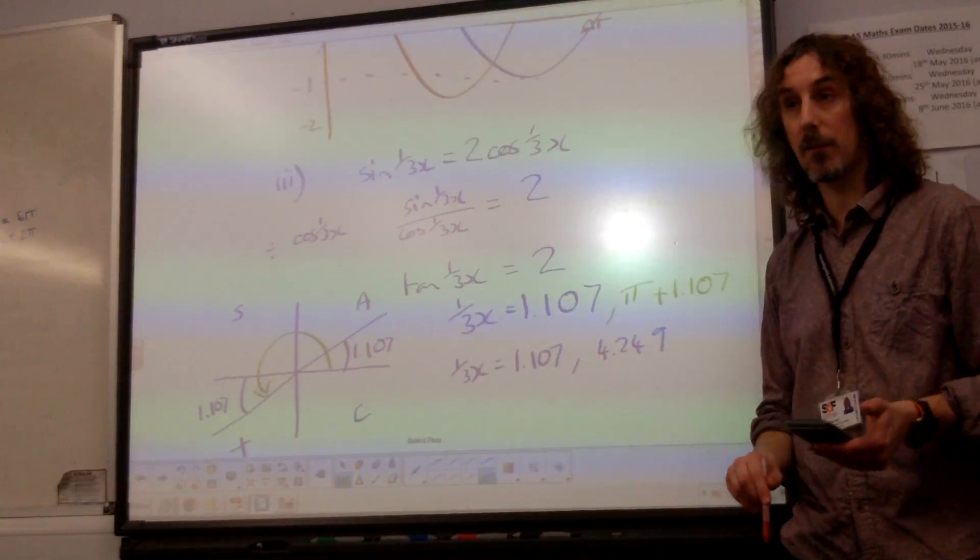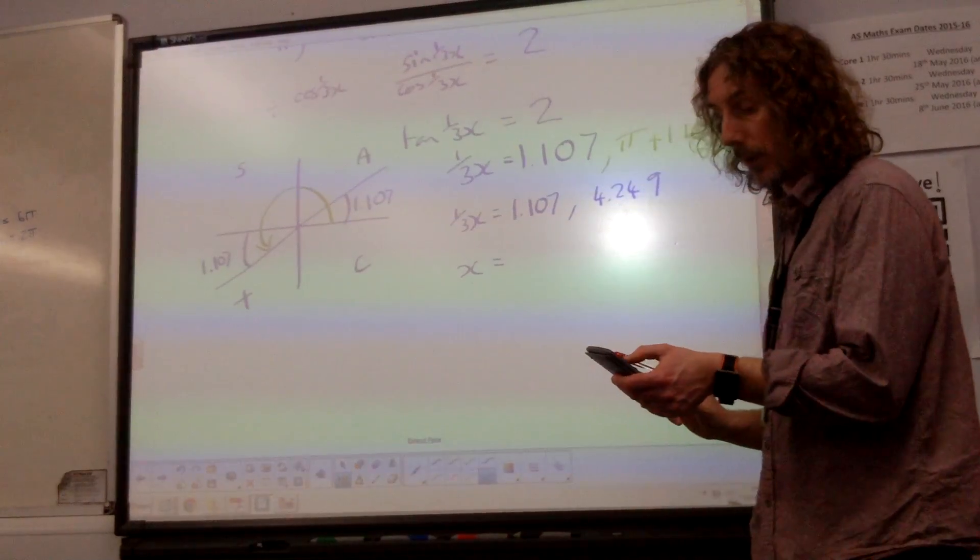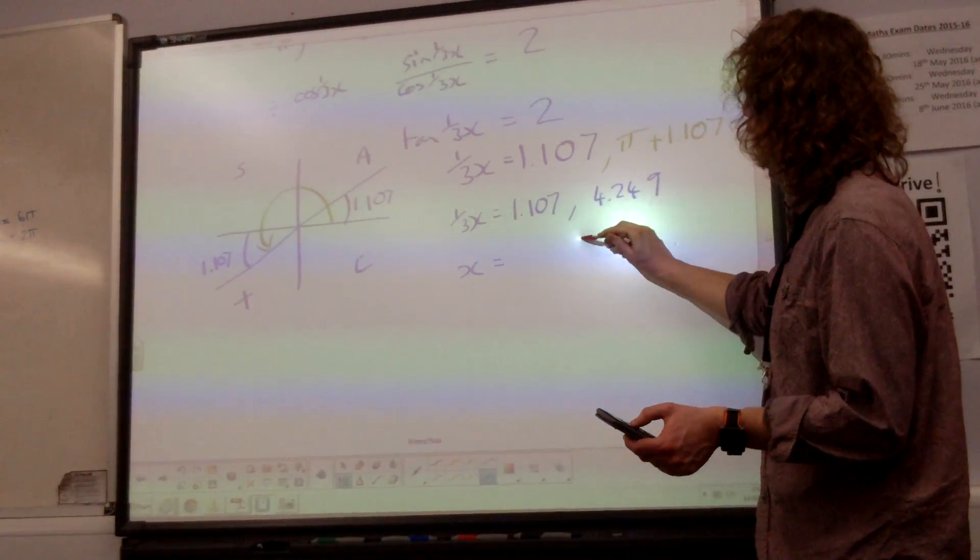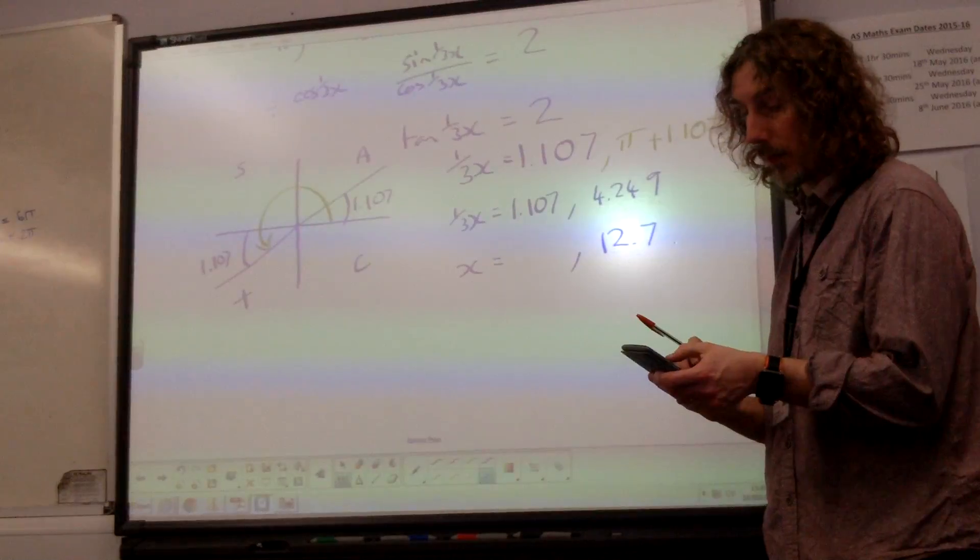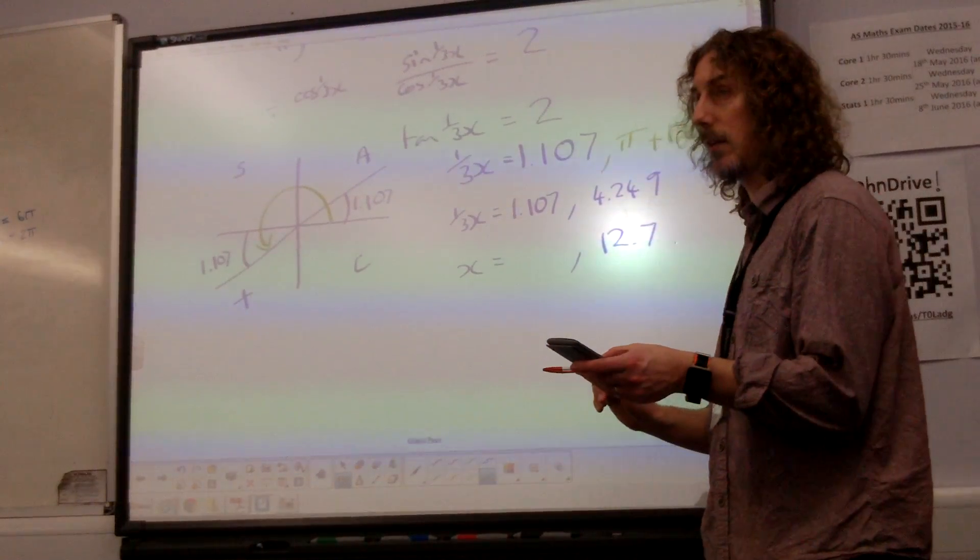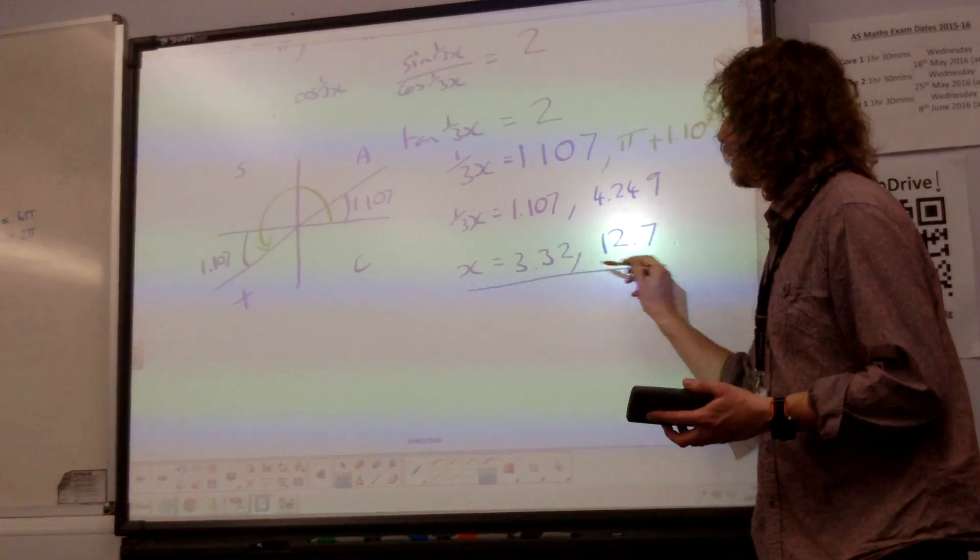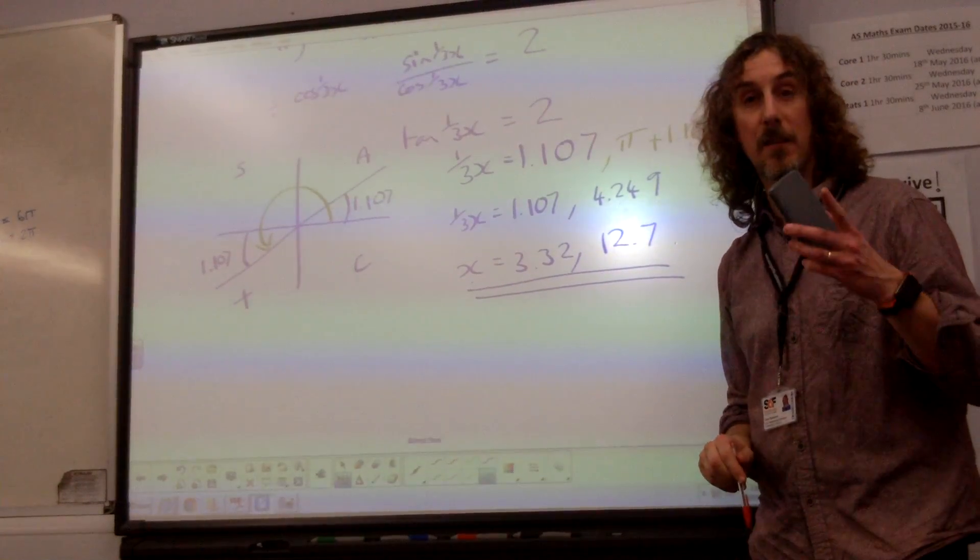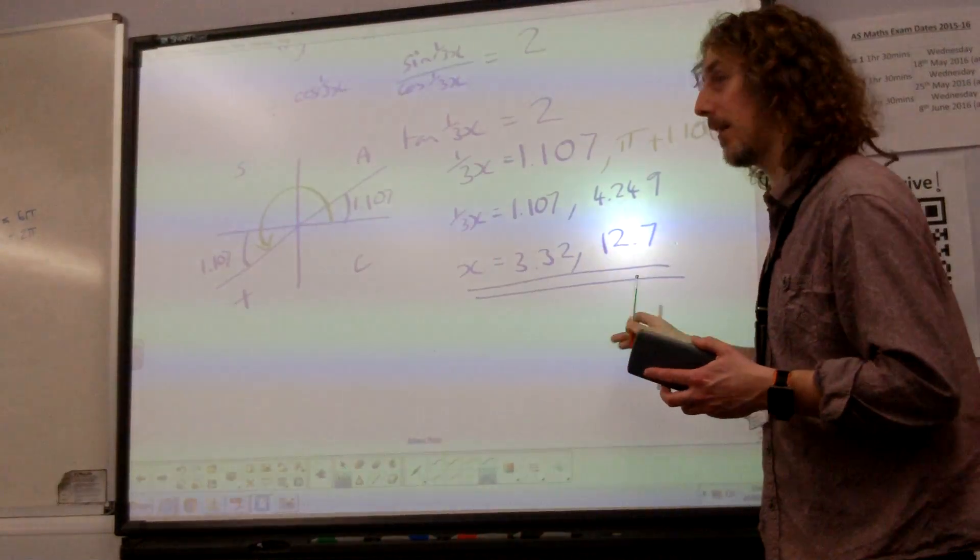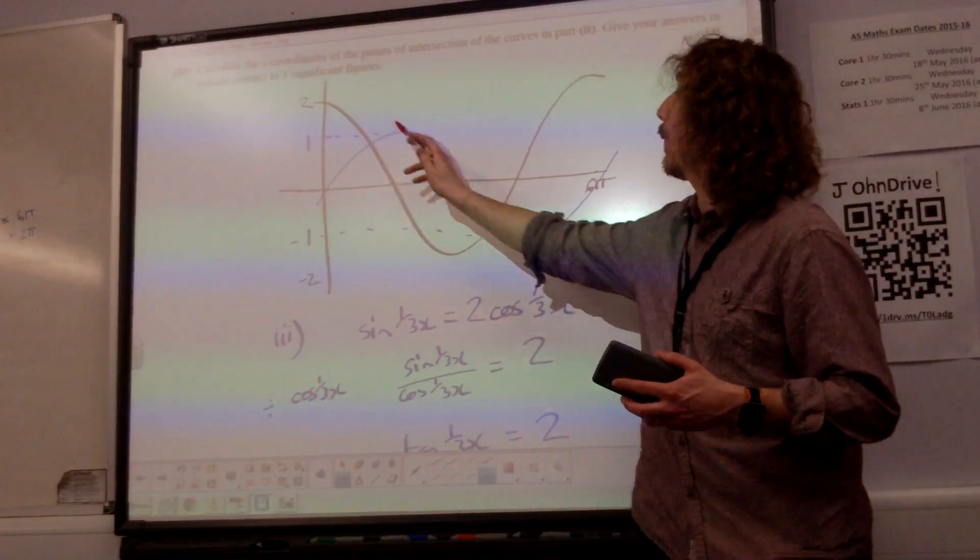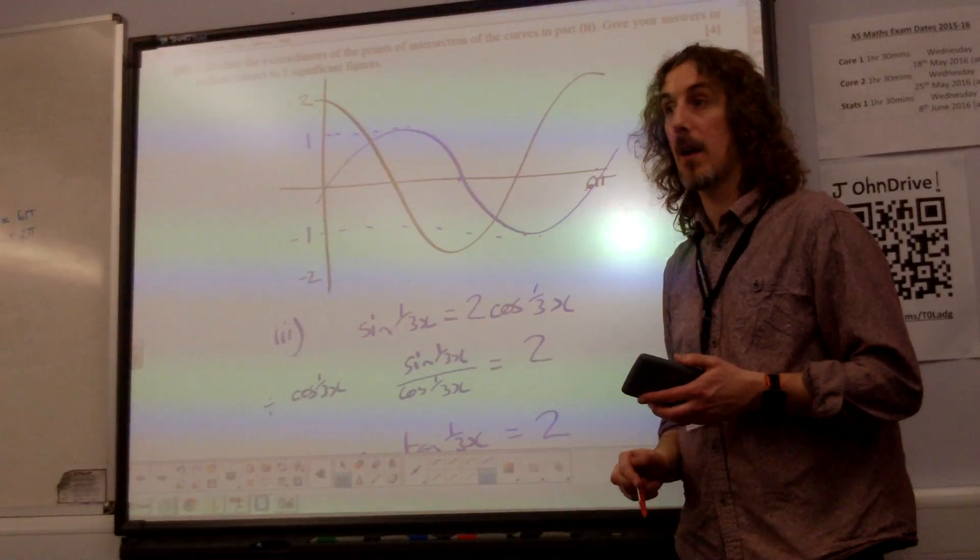And so x is 3 times these values. And we're doing it to 3 significant figures. So that one is 12.7, 3 significant figures. The other one is 3.32 to 3 significant figures. And they are our final answer. Notice we're expecting only to get 2 answers. We don't need to worry about going more around the cast diagram or anything like that. We're only expecting 2 answers. Because when we did the graph, we only got 2 answers. And that's maths.